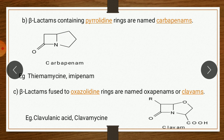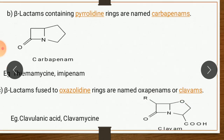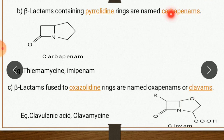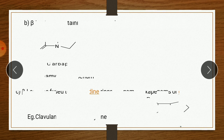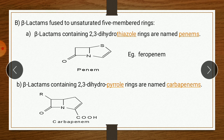(c) Beta-lactam fused to oxazolidine ring (oxygen instead of sulfur) named oxapenam or clavum; examples: clavulanic acid, clavamycin. Class B: beta-lactam fused to an unsaturated 5-membered ring. Within this: (a) beta-lactam containing 2,3-dihydrothiazole = penem (with double bond/unsaturation); example: faropenem.